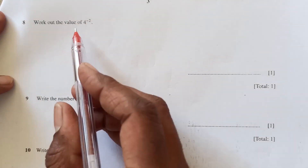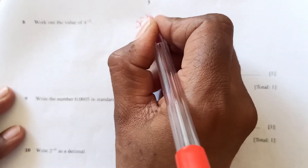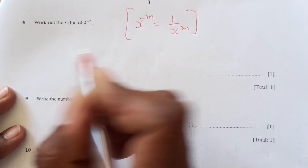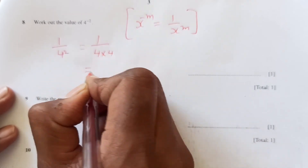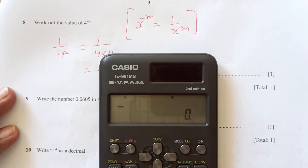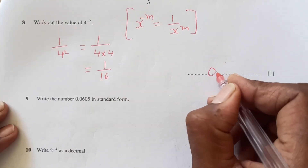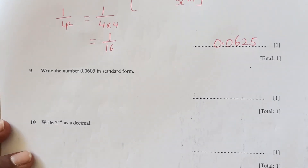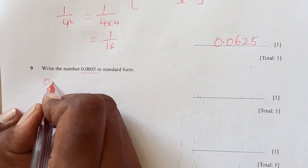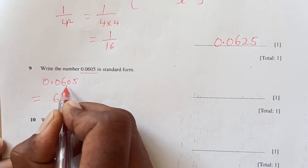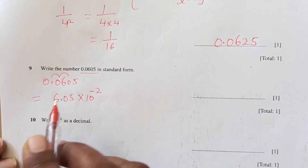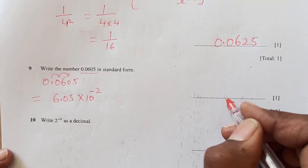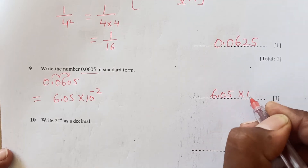Next: work out the value of 4^(negative 2). Using the rule x^(negative m) = 1 over x^m, this becomes 1 over 4^2 = 1 over 16 = 0.0625. Then write 0.0605 in standard form. The decimal moves 2 places to the right, and since we move right the power is negative, giving 6.05 × 10^(negative 2).